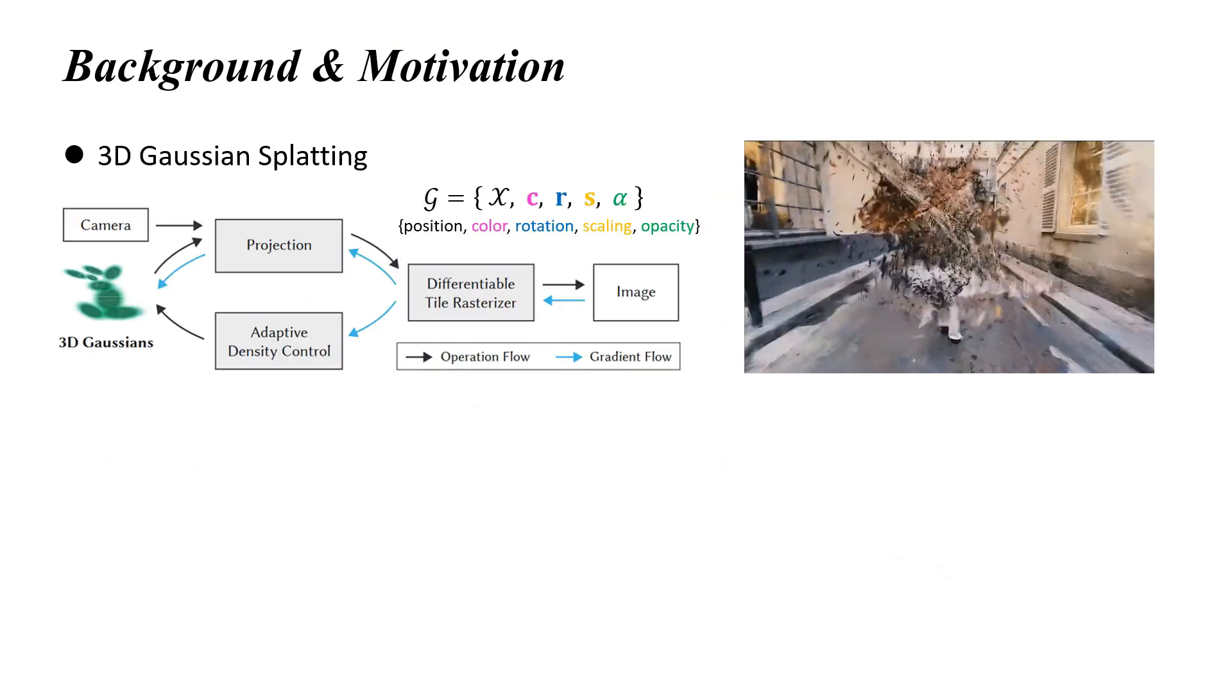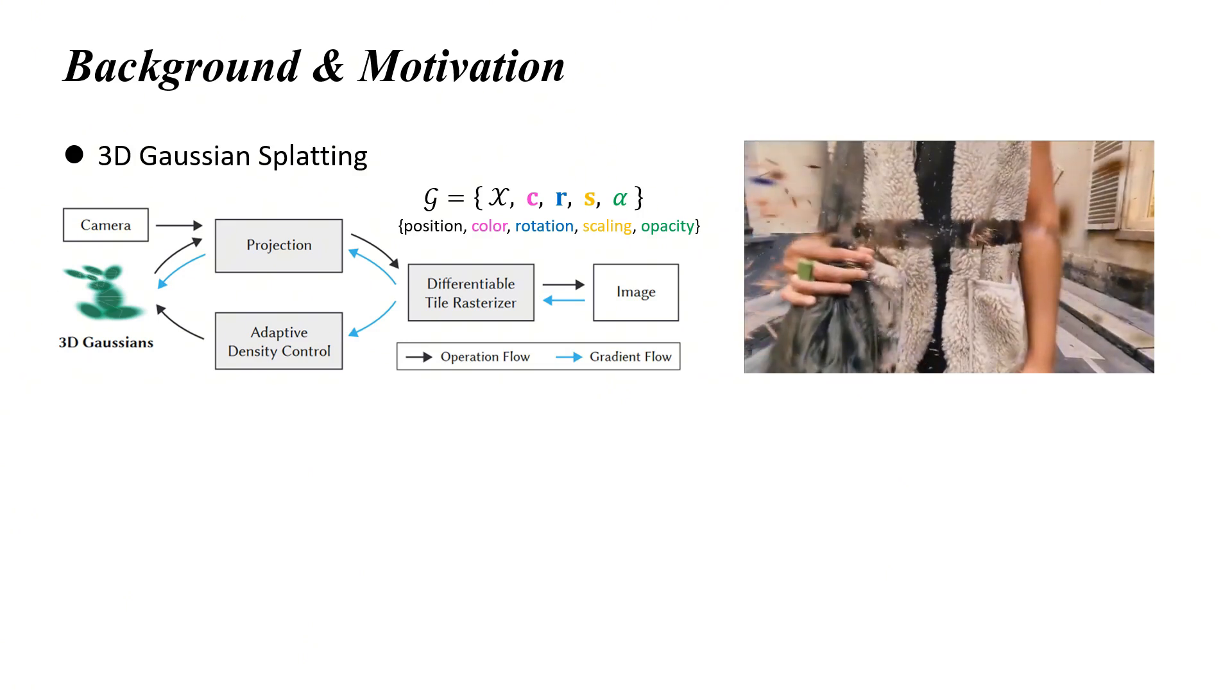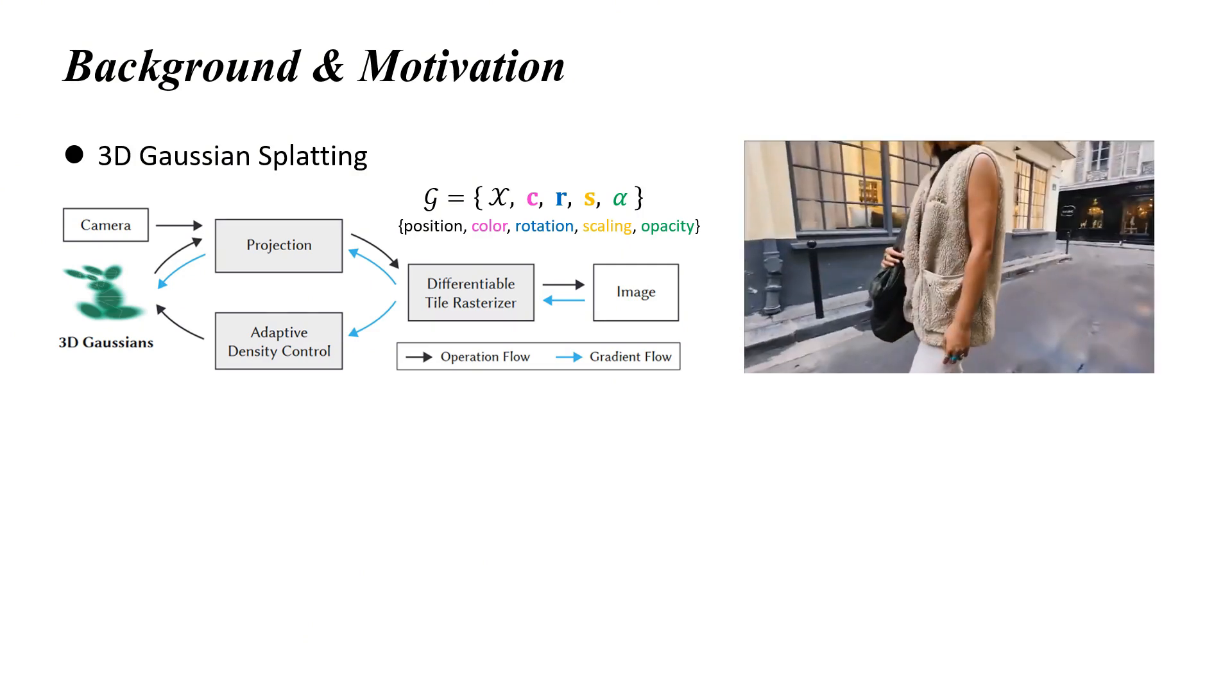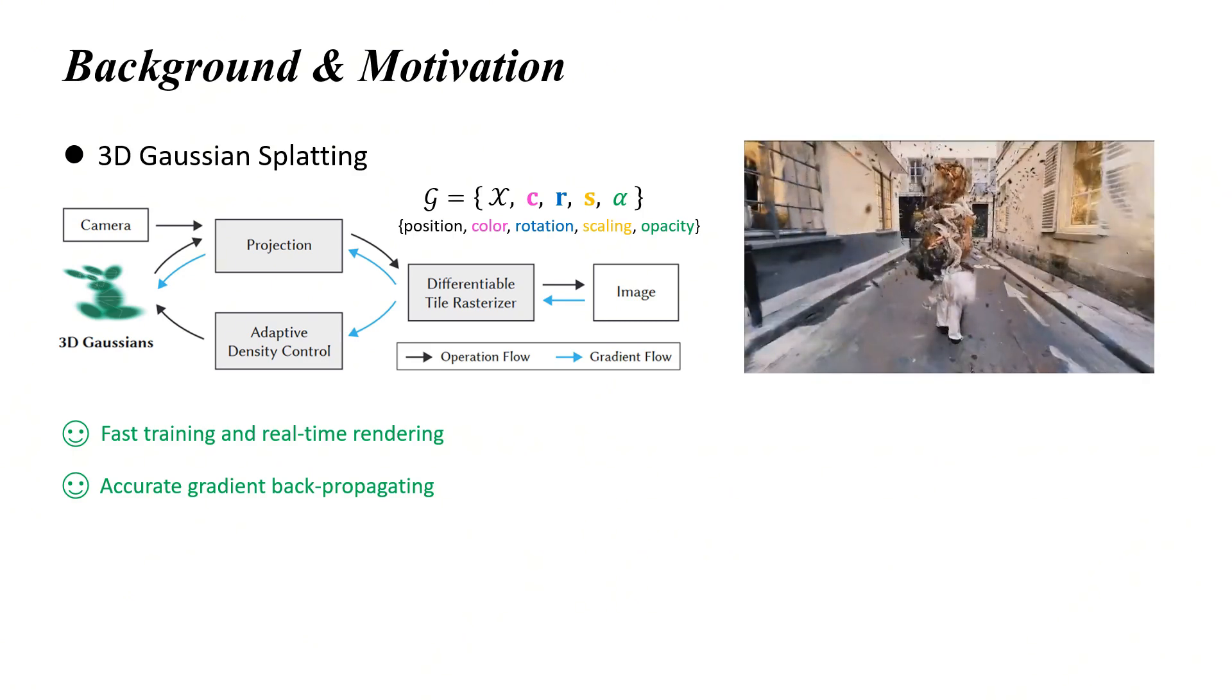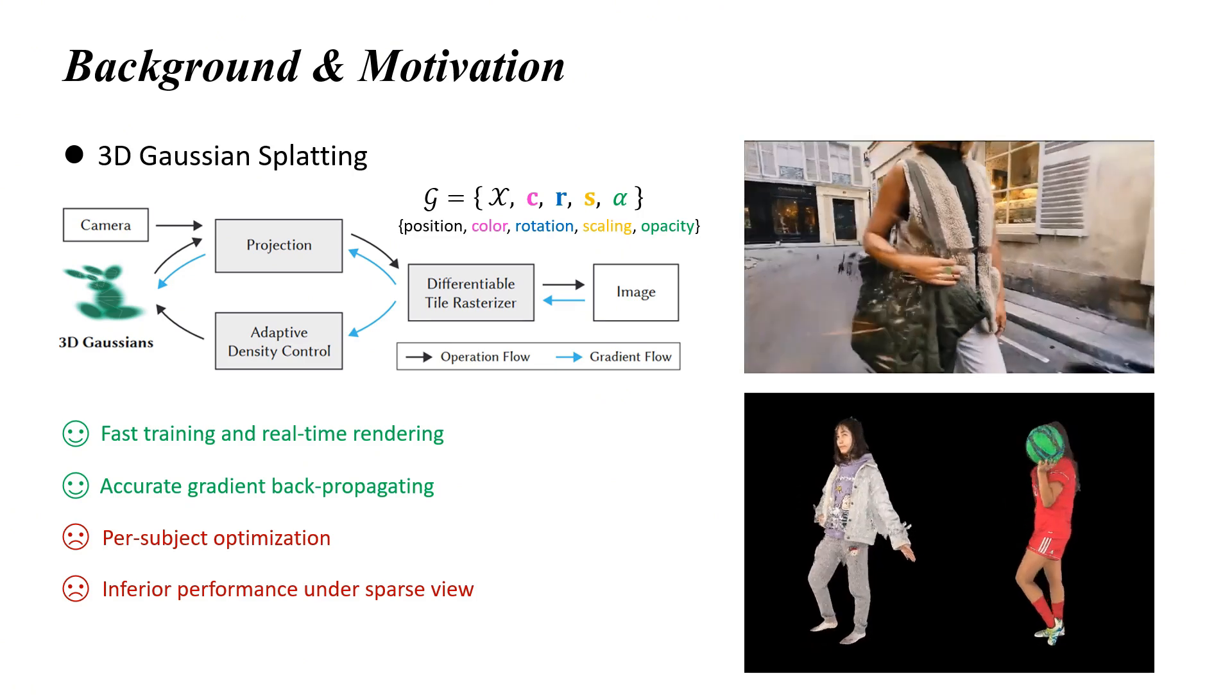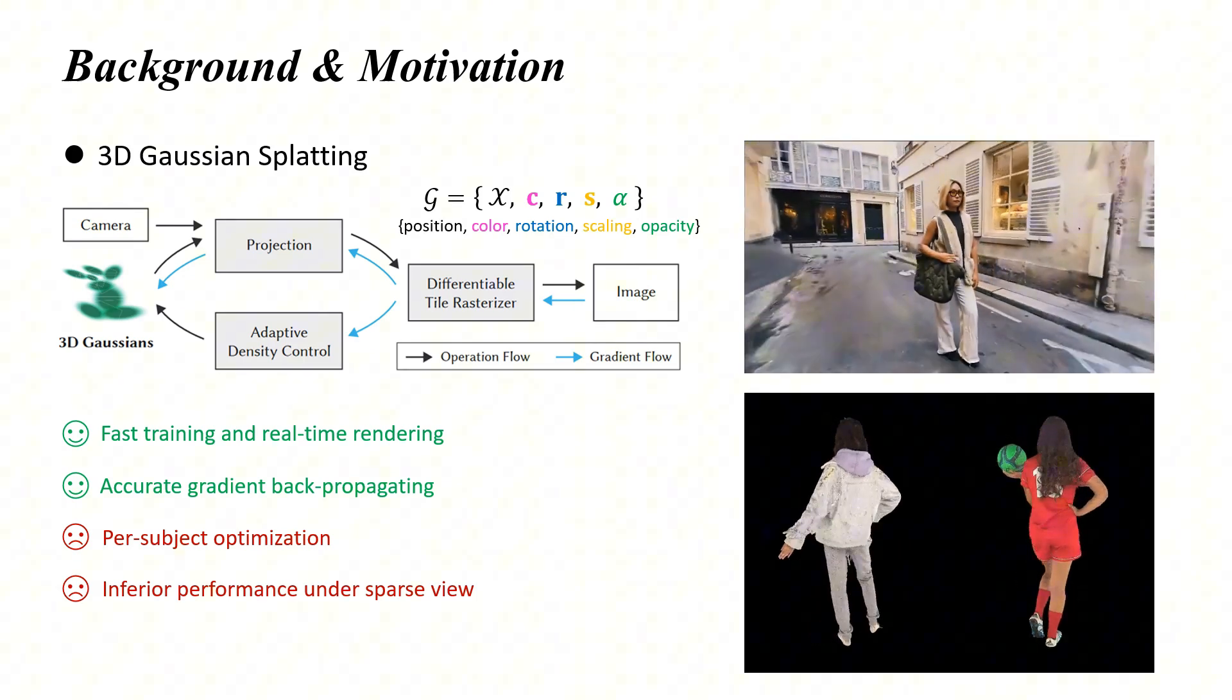Recently, 3D Gaussian splatting has emerged as a promising point-based representation. Each point is formulated as a 3D Gaussian primitive with a series of learnable properties including position, color, rotation, scaling, and opacity. By applying alpha blending, 3DGS provides not only a more reasonable and accurate mechanism for back-propagating the gradients but also a real-time rendering efficiency for complex scenes. However, the original 3DGS still relies on a per-subject optimization for several minutes and achieves inferior performance under sparse view.